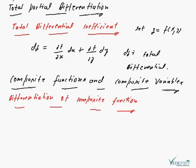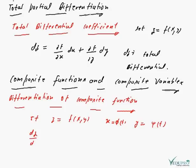The next topic is composite functions, composite variables, and the differentiation of a composite function. If z is the function of x and y, and x is the function of φ(t) as well as y is the function of ψ(t), then we can calculate dz/dt, which is given by the relation: ∂z/∂x · dx/dt + ∂z/∂y · dy/dt.